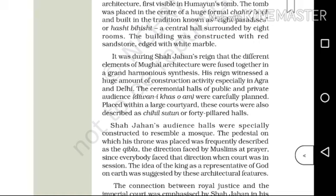It was during Shah Jahan's reign that the different elements of Mughal architecture were fused together in a grand, harmonious synthesis. His reign witnessed a huge amount of construction activity, especially in Agra and Delhi.